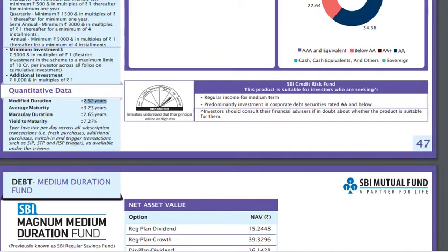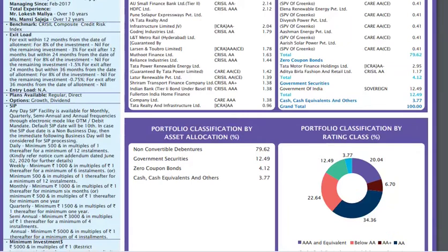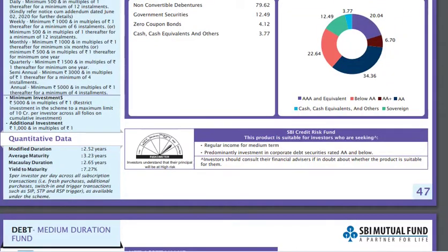If RBI changes the rate of interest, the modified duration of the portfolio will be affected. Modified duration is better understood in the context of RBI rate movements. We will try to explain the current situation: RBI interest rates are present in the market and influence the returns on debt funds. If you are interested in interest rate movements, the RBI rate is a key factor.